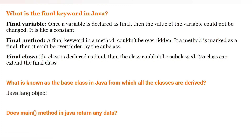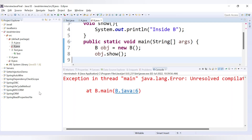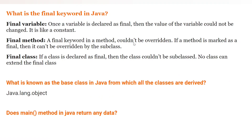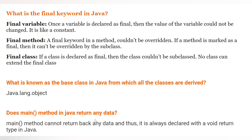The last question is: does the main method in Java return any data? As we know, the main method is declared as 'public static void main' — the return type is void, which means it does not return anything. So the main method cannot return any data and is always declared with a void return type. I hope you understood all the questions; we'll cover more interview questions in the next video.